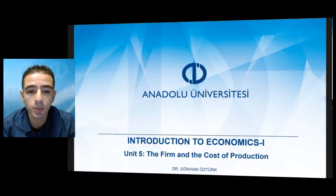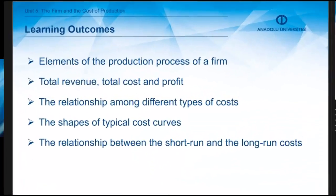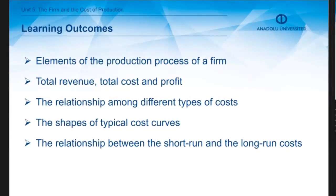First of all, I would like to go over the objectives of the unit. We are going to focus on the elements of the production process of a firm. At the end of this unit, you will also be able to understand total revenue, total cost, and profit, and be familiar with the relationship among different types of cost, recognize the shapes of typical cost curves, and understand the relationship between short run and long run costs.